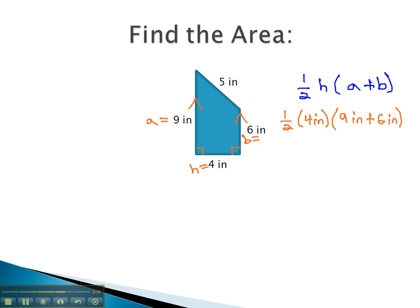This gives us our order of operations to find the area. Parentheses first, so we have one-half times 4 inches times 9 plus 6 is 15 inches, combining like terms.